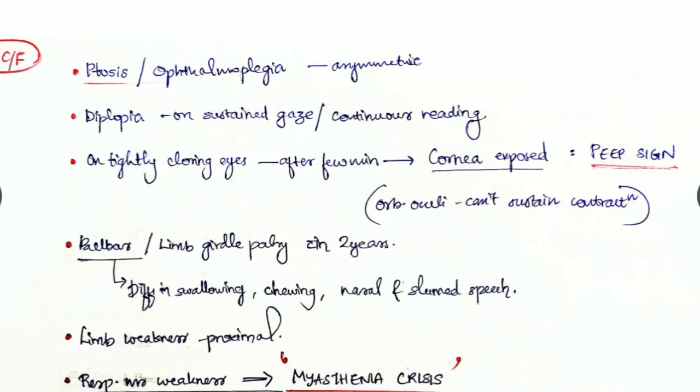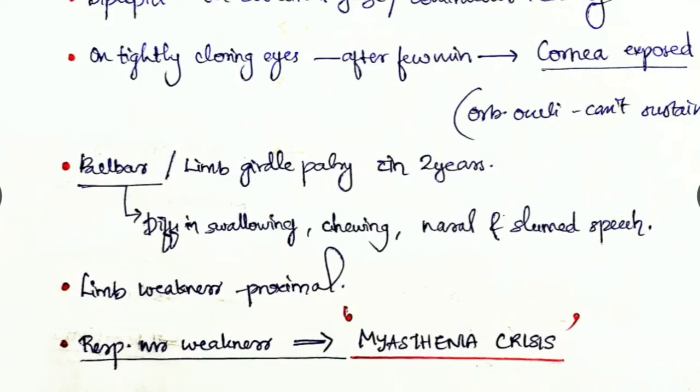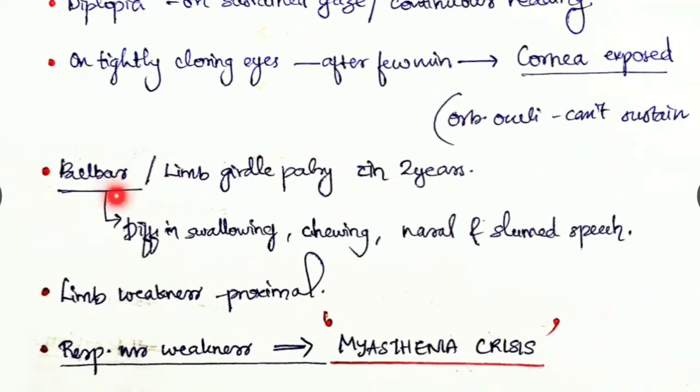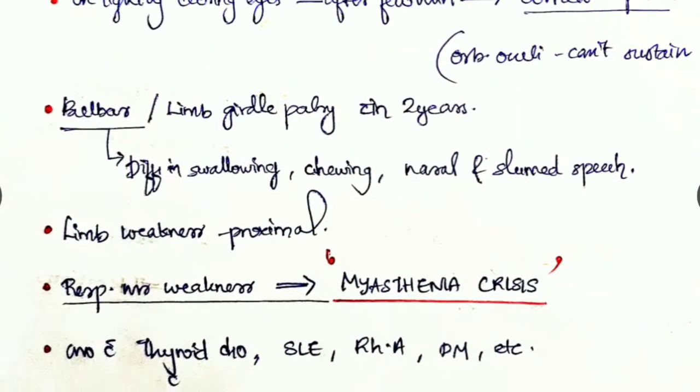As the disease progresses there is more weakness in other areas - bulbar palsy or limb girdle palsy within two years. Bulbar palsy is due to lesion in the nerves supplying the larynx and pharynx, so there is difficulty swallowing and chewing, plus nasal and slurred speech.